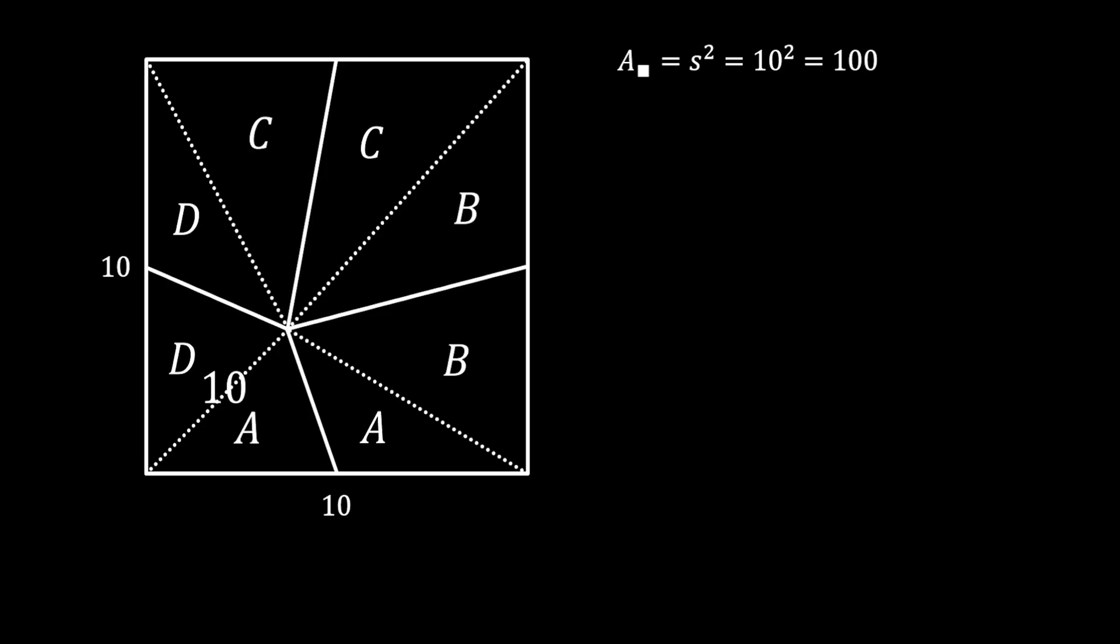But the area of our square also consists out of all areas of those eight triangles combined. So, we have two areas A, two areas B, two areas C, and two areas D.